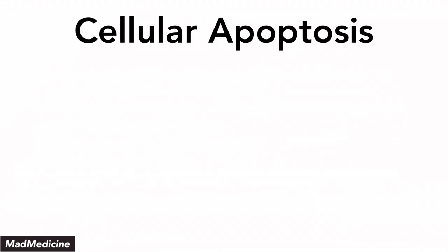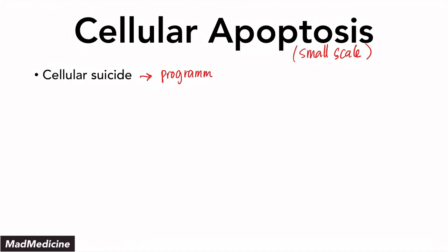Cellular apoptosis is a small-scale cell death that's happening. Remember, we talked about cellular necrosis in the previous video — that is a large-scale cell death. Cellular apoptosis is a small-scale death happening at the cellular level. Essentially, this is cellular suicide, and it is programmed. It is predetermined often, or it can be induced, but it is essentially programmed cell death.